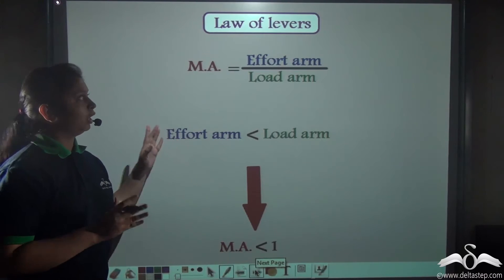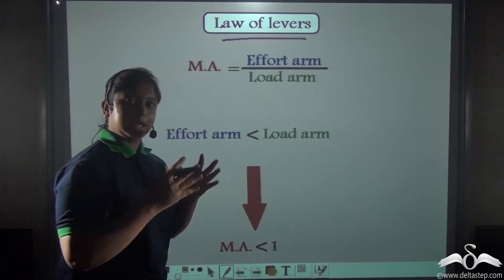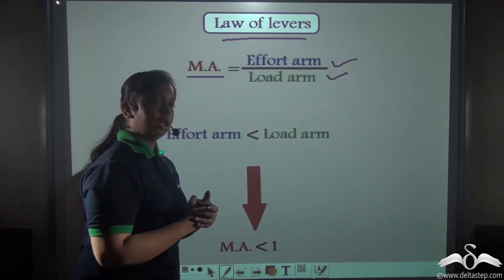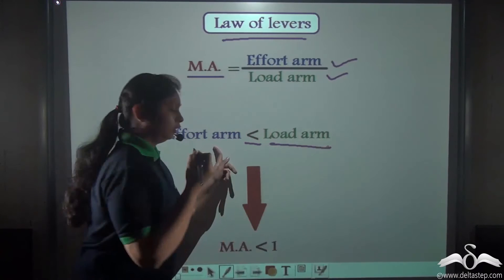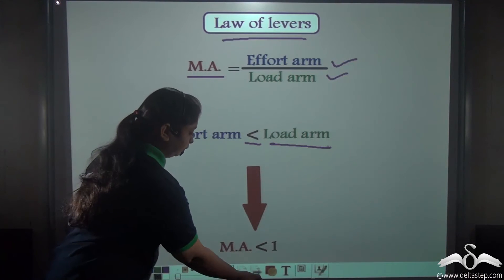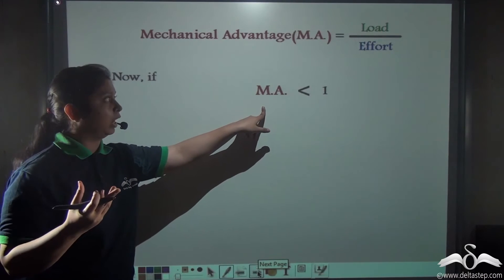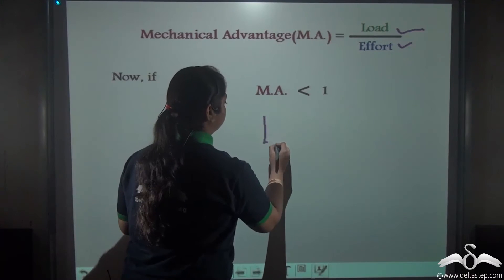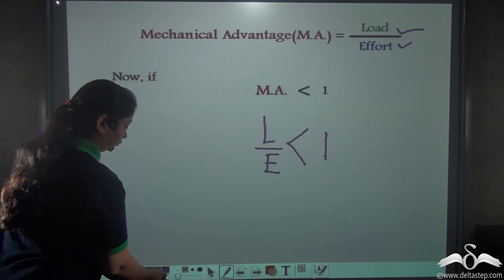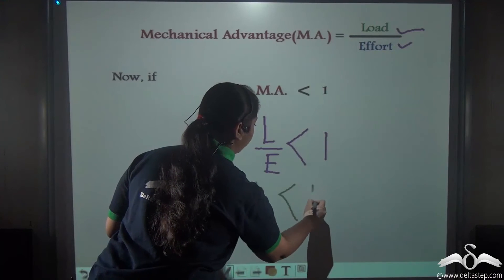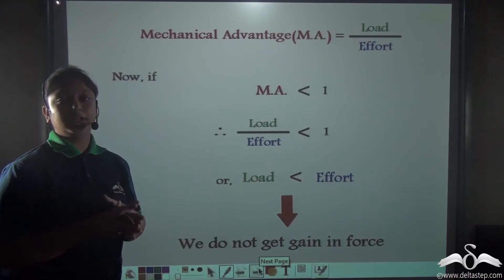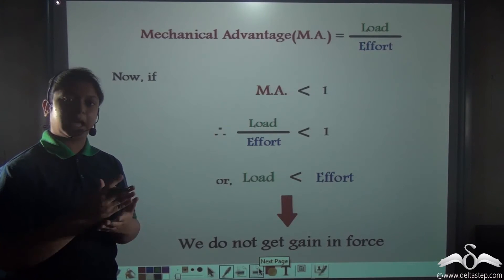By the law of levers, the mechanical advantage of any lever is the effort arm divided by the load arm. So if the effort arm is shorter than the load arm, the mechanical advantage would also be less than one. Since mechanical advantage equals load divided by effort, load by effort would also be less than one, meaning the load is lesser than the effort. That is, you are applying a larger effort to overcome a smaller load, so we do not get a gain in force by using a class 3 lever.